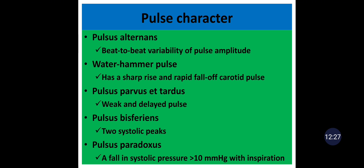During inspiration, intrathoracic pressure decreases. This results in increased venous return and right ventricular end-diastolic volume. Because of ventricular interdependence, this affects left ventricular compliance and function, resulting in a decline in systolic pressure. Exaggeration of this decline occurs in patients with pericardial effusion, pericardial tamponade, constrictive pericarditis, and severe obstructive lung disease.